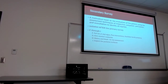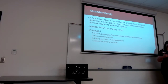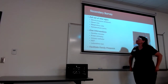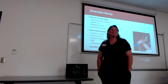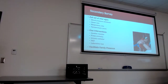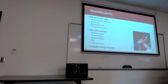Then we'll talk about G — giving comfort measures — and H, which is finishing up that head-to-toe assessment, filling in the holes where we haven't filled them in so far, and then I — inspecting the posterior side of the patient. Our full set of vital signs includes blood pressures bilaterally, heart rate, respiratory rate, and temperature. Along with that, our five interventions: cardiac monitor, pulse ox, NG tube, Foley catheter, and labs.